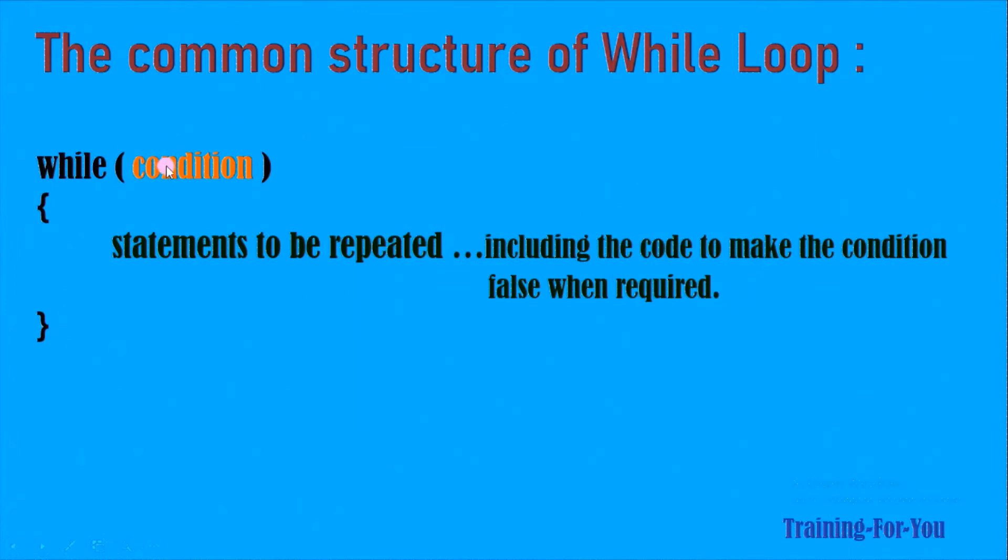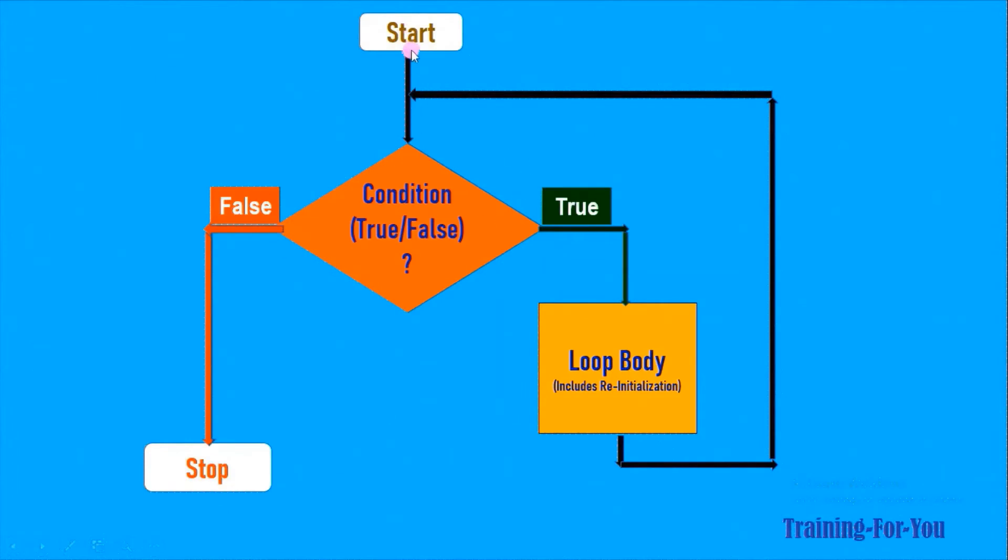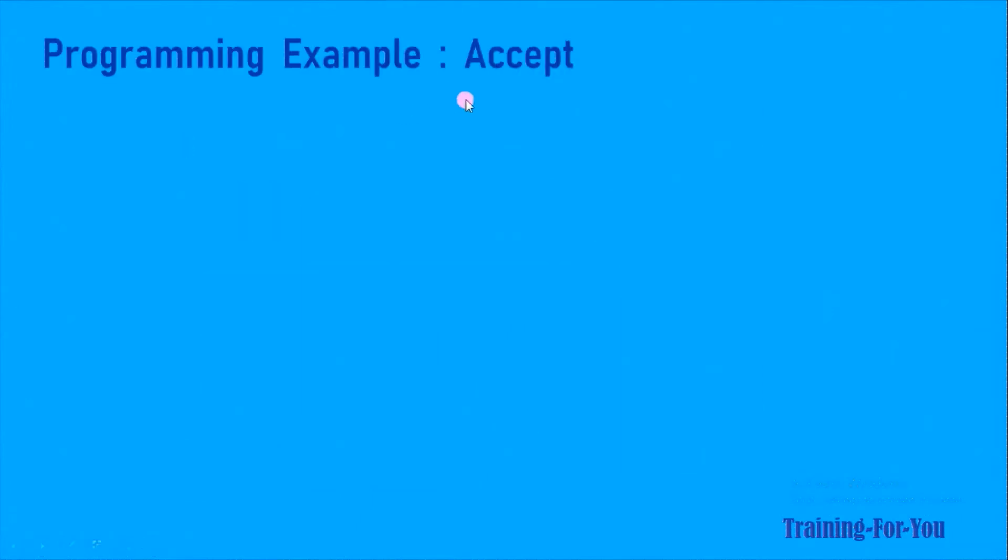Let's look at the flowchart. Once control comes to the while loop, the condition is tested. If it is true, it enters into the loop body. Once the loop body is over, control again comes to the condition. As long as the condition remains true, it goes on repeating the loop body. The moment the condition results in false, the loop execution stops.